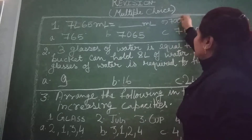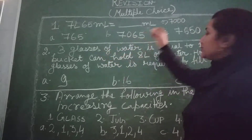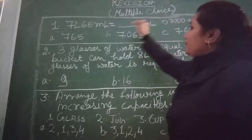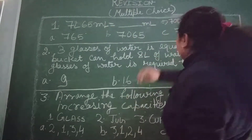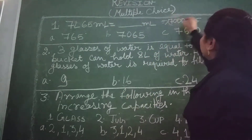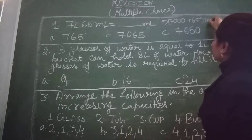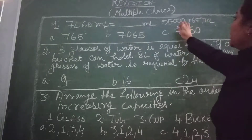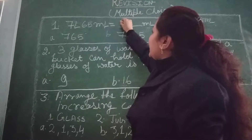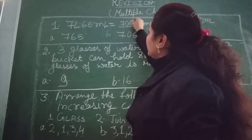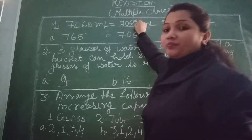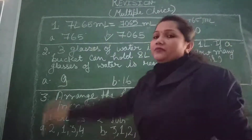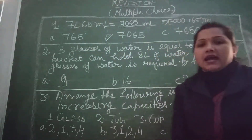So we will get 7000 plus 65. The 65 is already given in millilitre. So 7000 plus 65 millilitre will be the answer. After the addition, we will get the answer 7065 millilitre. Hence, as you can see here, option B will be the correct answer.